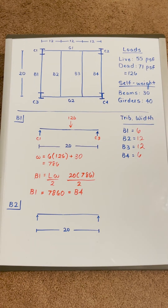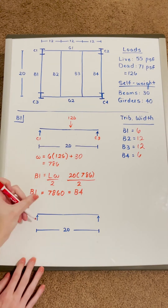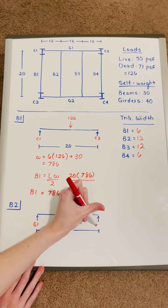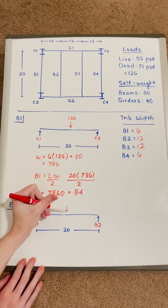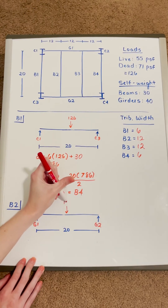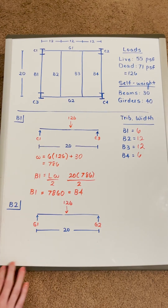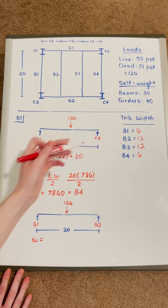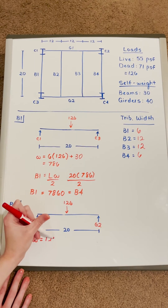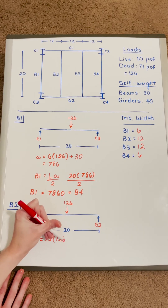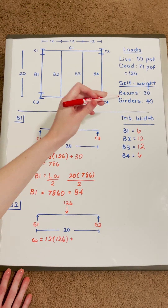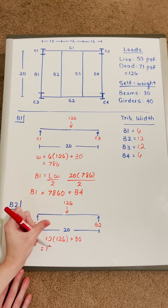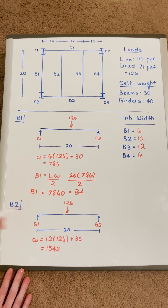Moving on to beam 2, I'll solve it the same way. It's supported by girders 1 and 2 and also has a force acting downward of 126 PSF. For omega, I take the tributary width — which is 12 this time — times 126, plus the self-weight of 30, which comes out to 1,542 total.